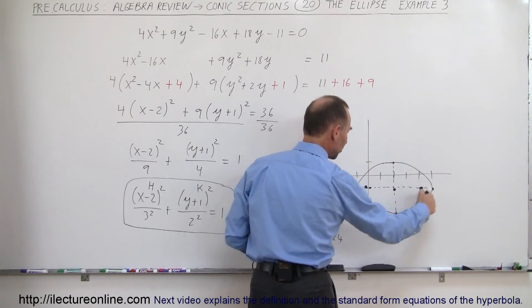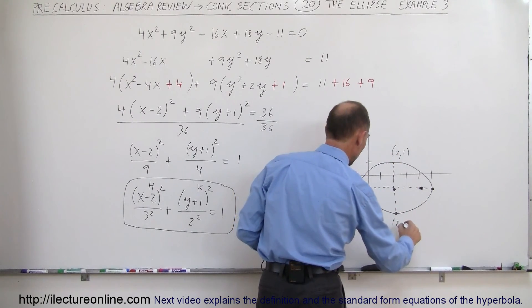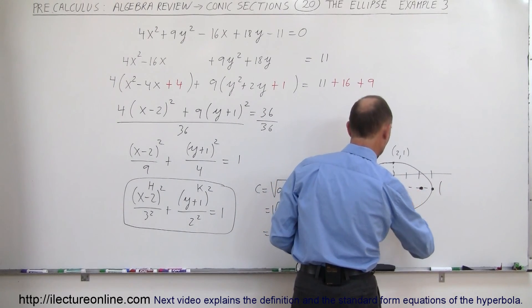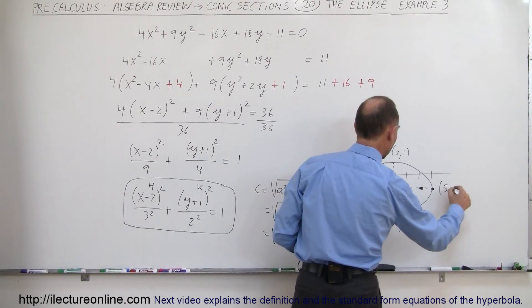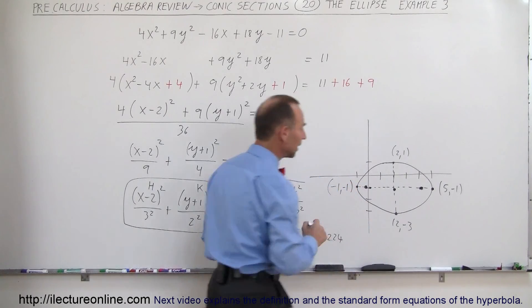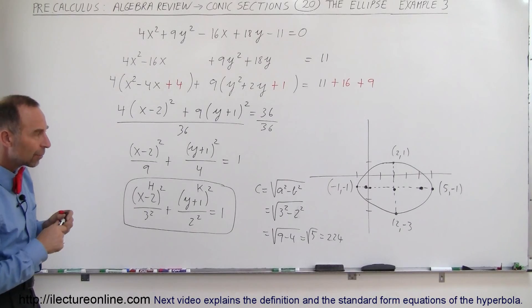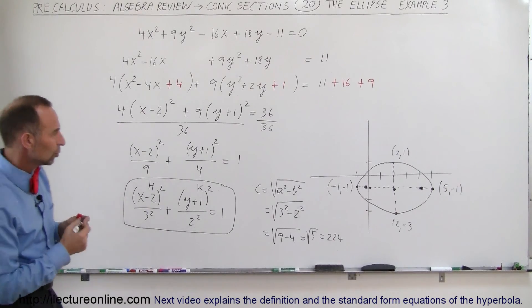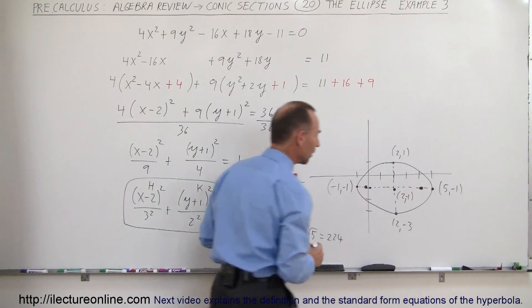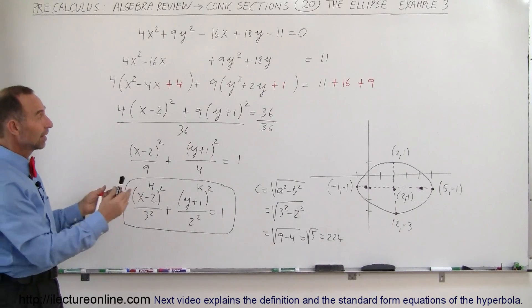So the foci are approximately at those positions along the major axis. To summarize the key labeled points: the center is at (2, negative 1); the major axis vertices are at (5, negative 1) and (negative 1, negative 1); the minor axis co-vertices are at (2, 1) and (2, negative 3). That gives a clear picture of what the ellipse looks like, and that's how we do it.